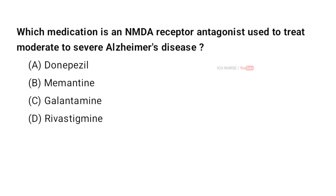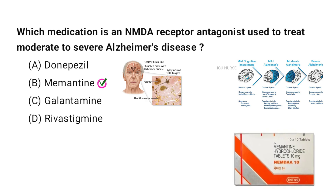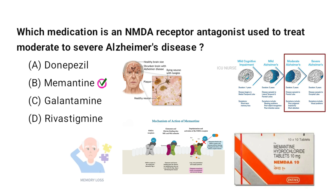Which medication is an NMDA receptor antagonist used to treat moderate to severe Alzheimer's disease? A. Donepezil, B. Memantine, C. Galantamine, D. Rivastigmine. And the correct answer is B. Memantine. Memantine works by blocking NMDA receptors in the brain, which are involved in controlling memory and learning. By blocking these receptors, it helps prevent excessive stimulation that can damage brain cells, improving symptoms such as memory loss and confusion and making daily activities easier for patients.